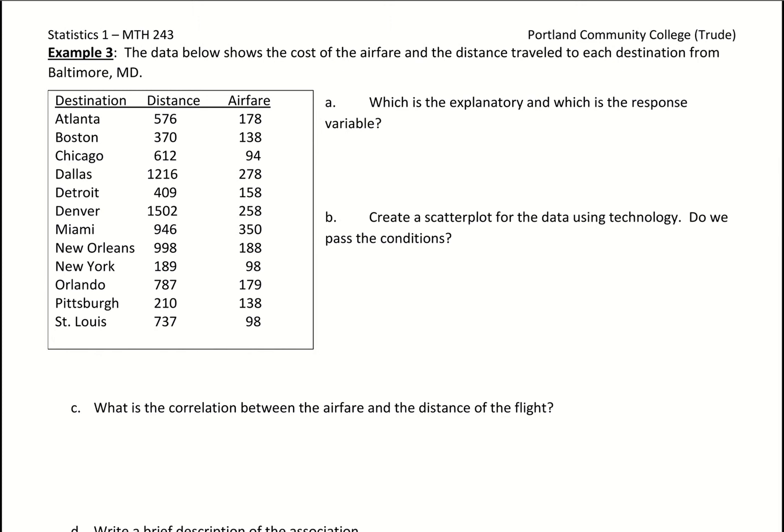So in that first column they're describing the distance away, second column they're describing the airfare, and they tell us the destination where they're heading.